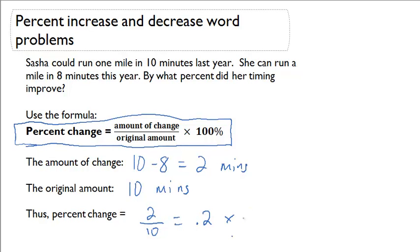If we write that as a percentage by multiplying by a hundred percent, we'll get twenty percent. So by what percent did her timing improve? She improved by twenty percent.